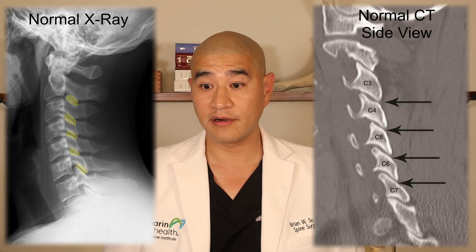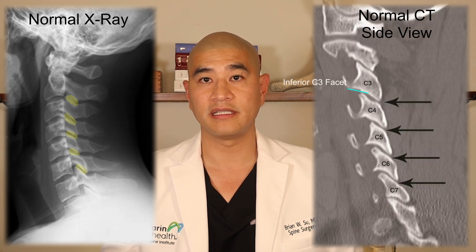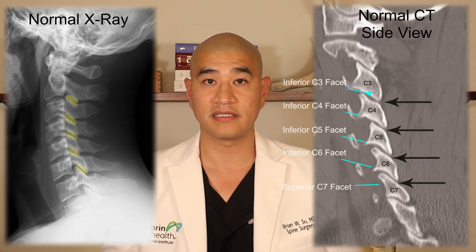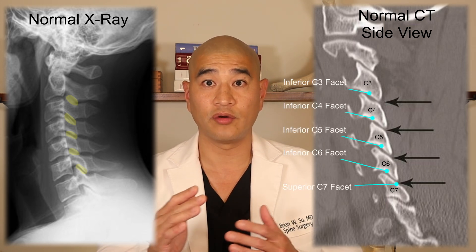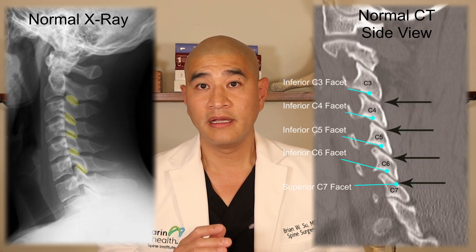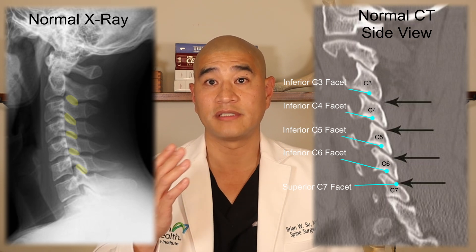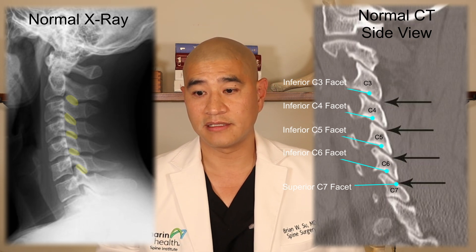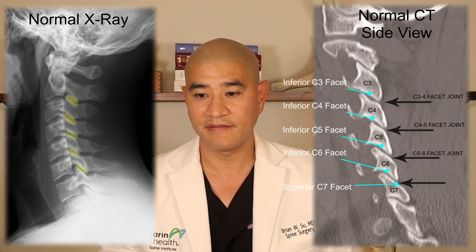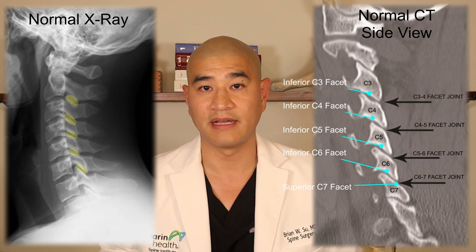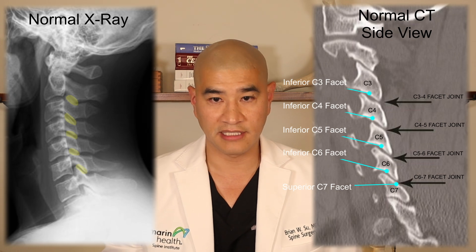The facets are named by number — there's C3, C4, C5, C6. The joint in between is named by the bones it sandwiches, so that's the C3-4 joint, C4-5, C5-6, C6-7 facet joint, and so on.